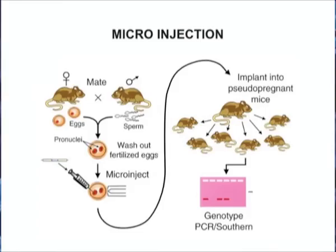The female mice are induced to superovulate by treatment with hormones and are mated with fertile males. Large numbers of fertilized ova are collected. The transgene construct is prepared in a buffer solution and injected into the male pronuclei of the fertilized egg — usually two picoliters of DNA solution is inserted in the pronucleus. The microinjected embryos are cultured in vitro until the morula or blastula stage. The female mice are treated with hormones to prepare them to develop the embryo, and the surviving embryos are transferred into the uterus of the prepared surrogate mother. The embryo develops into full normal mice.